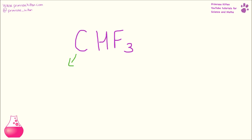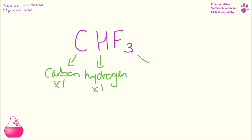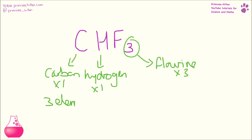Here we have another one. We have carbon. Because it doesn't have a number after it, it means there's only one. Hydrogen — because there's no number, it means there's only one. And fluorine — because there's a number, there are three. So we have three elements and one plus one plus three equals five atoms.